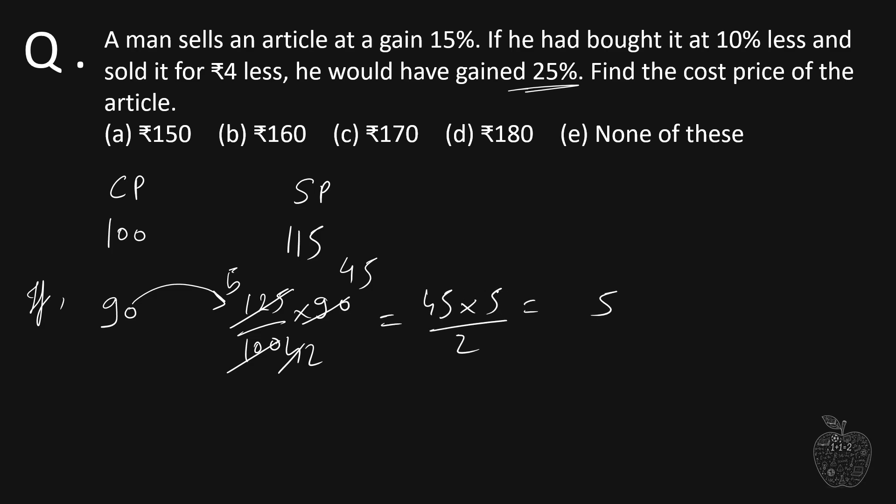Which is 22 over 2, which is 112.5. So we got 112.5 as the selling price. If he had bought it at 10 percent less, that is 90, the selling price would have been 112.5.